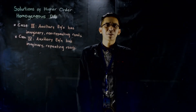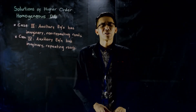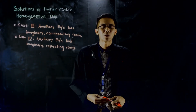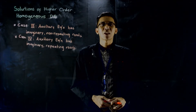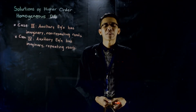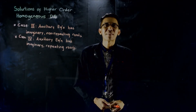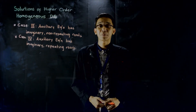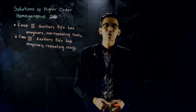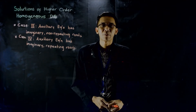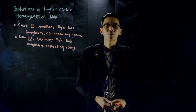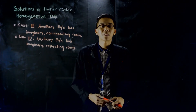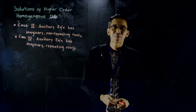Let's say the auxiliary equation of the given higher-order homogeneous differential equation contains imaginary roots. We have cases 3 and 4 for that. For case 3, the imaginary roots are non-repeating, just like case 1 in which we have real roots. And for case 4, we have repeating imaginary roots for our auxiliary equation.